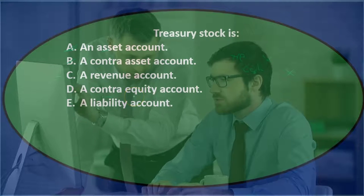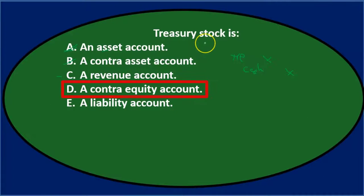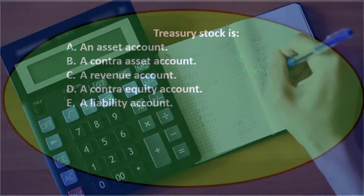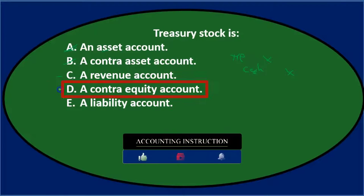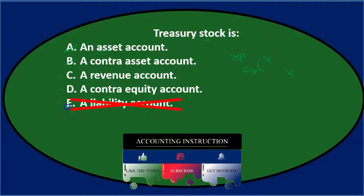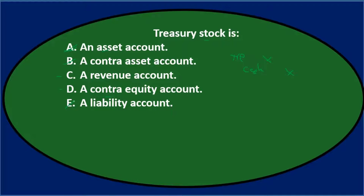D says a contra equity account — equity sounds right because it says stock, though the contra part is a bit uncertain. I'll keep D for now. E says a liability account — same argument as before, it says stock so it's probably in the equity section, not a liability. So we'll keep C and D: either a revenue account or a contra equity account.